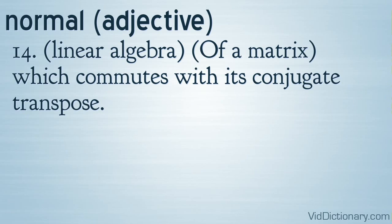Definition 14: Linear algebra — of a matrix, which commutes with its conjugate transpose.